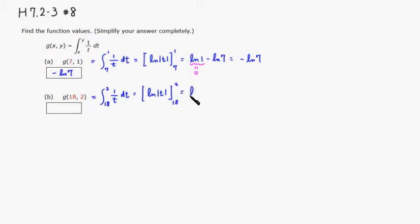Alright, so it's going to be a natural log of 2 minus natural log of 18. And if you want to combine these two, you can combine them. So if you have a subtraction outside, you can write it as a division. So 2 over 18. Alright, then you can cancel 2. That will give you 1 and 9.